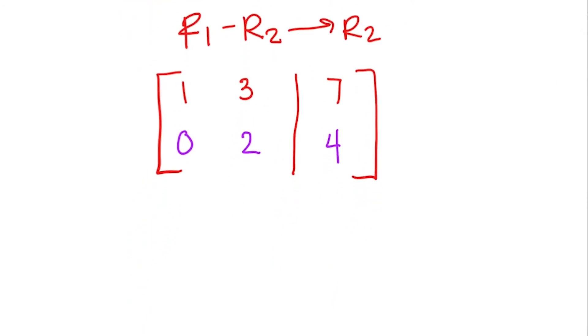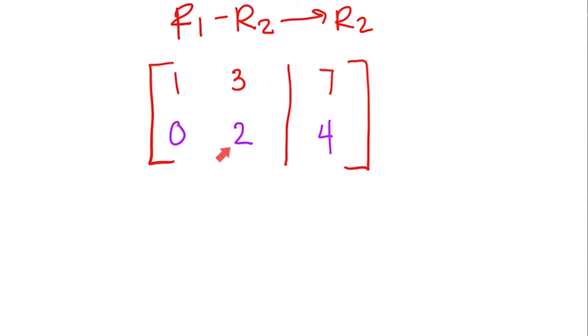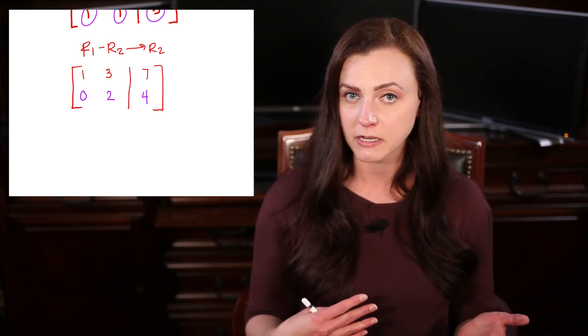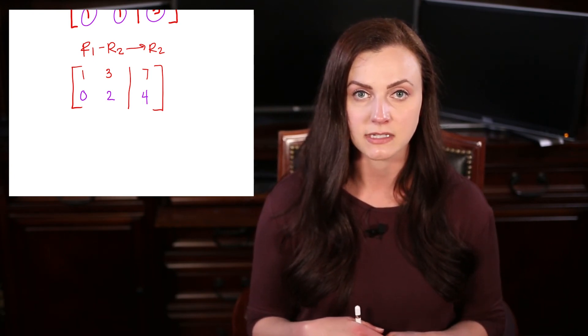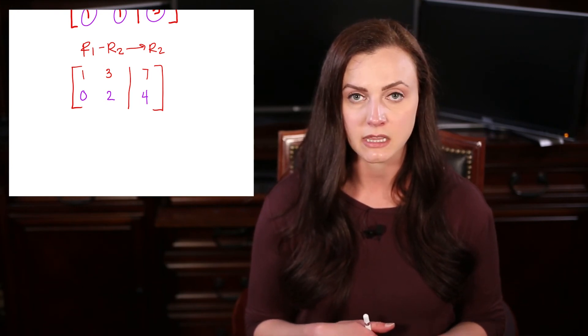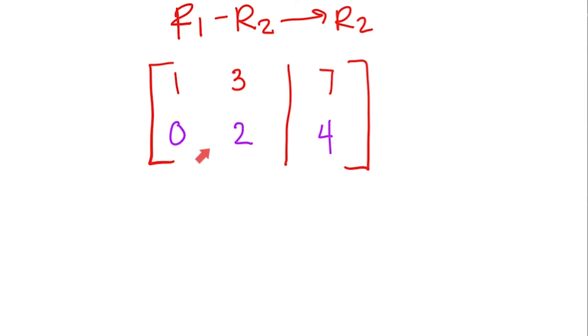Alright. So we have 2 of the numbers we need. The next thing we need to do is make this number a 1. Now earlier I said from the first row we could have divided by 2 if we wanted to, but we decided to subtract instead. Here's another example of where we can divide by a number to get the 1 that we need. So in this row, we want a 1 here, and I can get that by dividing by 2. And 4 is also divisible by 2, so that will not create any fractions for us.